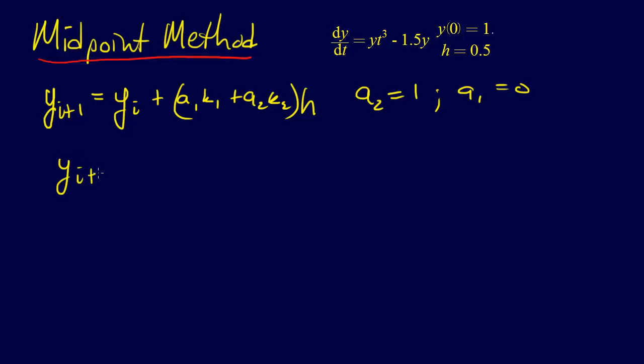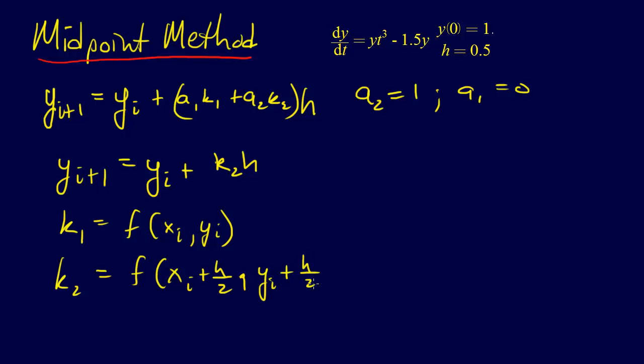So what that means is that we have Yi+1 equals Yi plus just K2 times H. And our K1 is equal to F of Xi, Yi, and K2 equals F at Xi plus H over 2, so we're a half a step ahead in the X, and then Yi plus H over 2, half a step in the Y, but we modify that by our best guess at a slope, so plus that times K1. So this is the midpoint method.